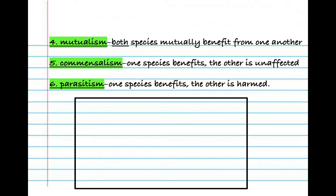Let's add parasitism to our notes: one species benefits, the other is harmed. There's also an interesting fungus whose spores land on ants and go straight to the ant's brain, controlling it — sometimes called zombie ants. The fungus directs the ant to climb to a high point and latch on, and eventually a tiny mushroom-like structure bursts from the ant's head. That's probably one of the creepiest examples. If you're interested, just Google 'ant fungus parasite.'